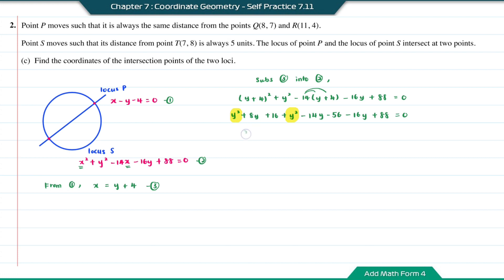Collecting like terms: y squared plus y squared gives 2y squared. Positive 8y minus 14y minus 16y gives negative 22y. And 16 minus 56 plus 88 gives positive 48. So 2y squared minus 22y plus 48 equal to 0. Dividing every term by 2 gives y squared minus 11y plus 24 equal to 0.